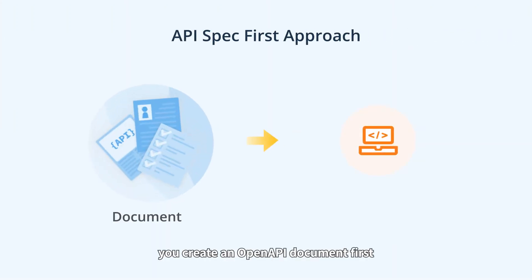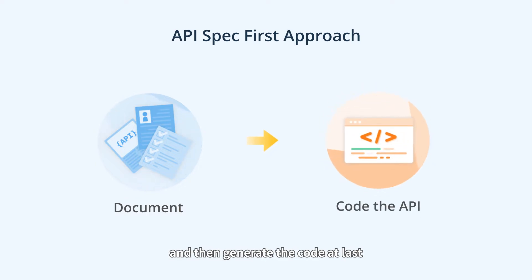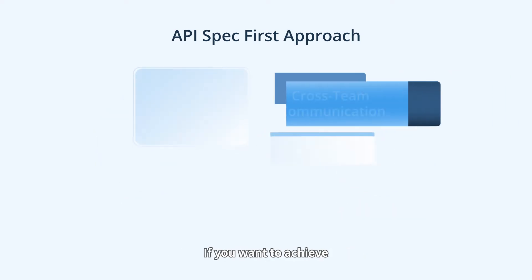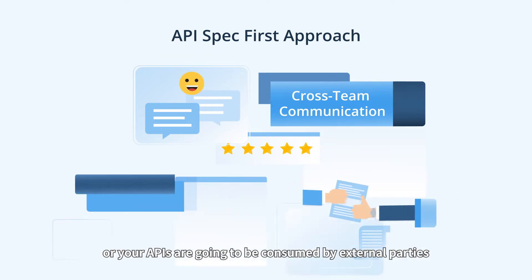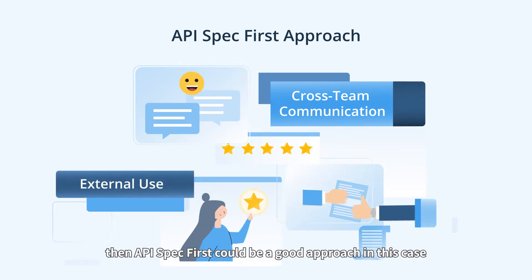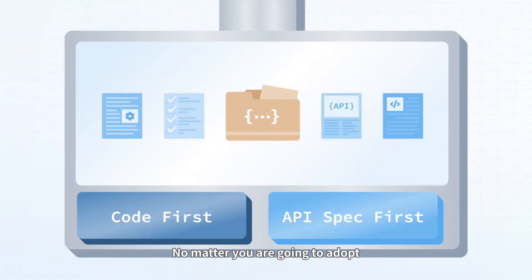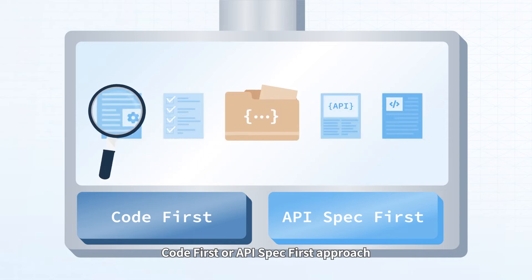The API spec first approach means you create an OpenAPI document first and then generate the code. If you want to achieve a good cross-team experience in communication, or your APIs are going to be consumed by external parties, then API spec first could be a good approach. No matter which approach you adopt — code first or API spec first —